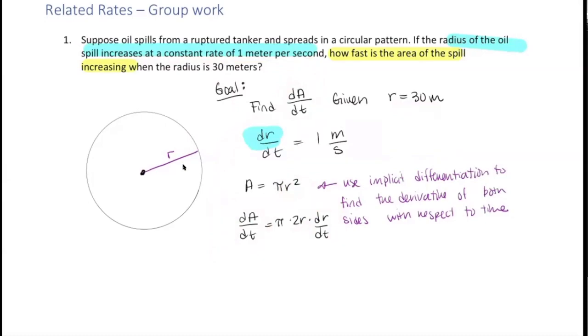So 1 meter per second. That means I have dA/dt is equal to π times 2 times 30, and it's 30 meters times 1 meter per second. When we multiply that out, we should get 60 here, so 60π. And our units are meters times meters, so meters squared over seconds. So we have 60π meters squared per second.